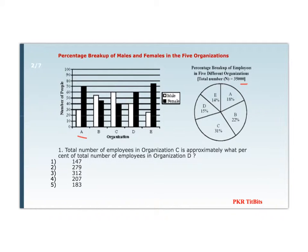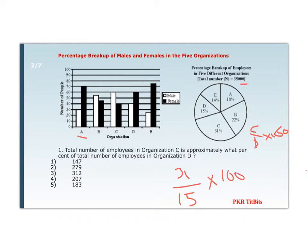First question: the total number of employees in organization C is approximately what percent of the total number of employees in organization D? We calculate C divided by D into 100. C is 31% of 35,000 and D is 15% of 35,000. We can cancel 35,000, giving 31/15 × 100. Approximating 31 as 30, we get around 200%. So the answer is option 4.